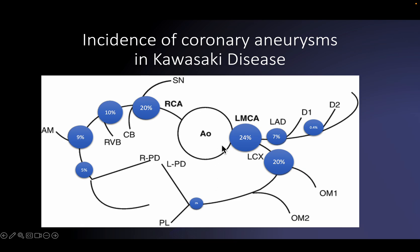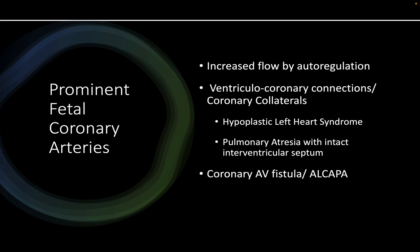Common coronary artery dilatation occurs in about 25 percent of patients in the proximal segment — left main, circumflex, and RCA. Proximal RCA, left main, and circumflex account for about 60 percent of aneurysms. Fortunately, aneurysms happen less frequently distally, which are obviously very difficult to pick up on echocardiography.